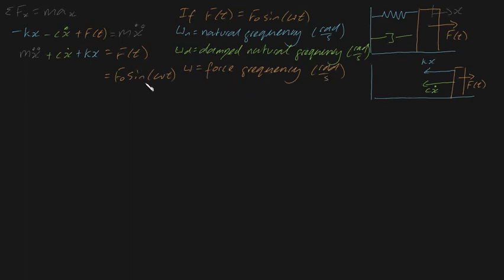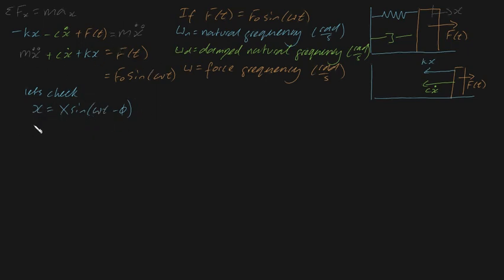So let's see if we can find what we call a particular solution to this differential equation. Let's check whether x equals capital X sine of (omega t minus phi) is in fact a solution, where capital X is a constant and phi is just a constant. We find out whether it's a solution by plugging this into our equation. To do that, we need its derivatives: x-dot is going to be equal to omega capital X cosine(omega t minus phi), and x-double-dot is going to be minus omega squared X sine(omega t minus phi). That's just using your trigonometric differentiation rules.